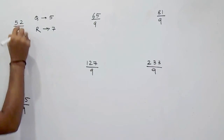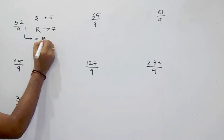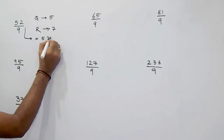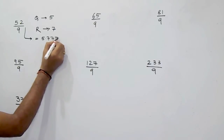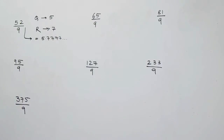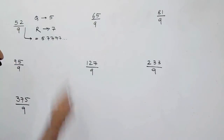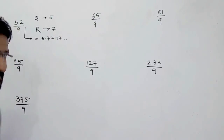So 52 divided by 9 is nothing but 5.7777 and so on — that is your answer. It is very easy. Now we will see the next one.